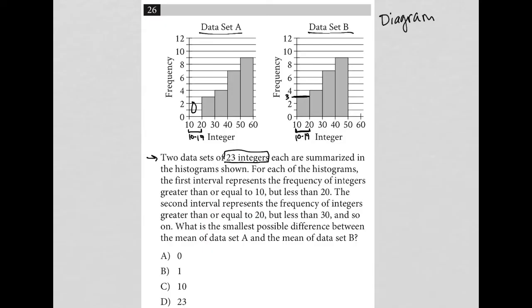Then it goes on to say the second interval represents the frequency of integers greater than or equal to 20, but less than 30, right? So we just continue on. So that'd be 20 to 29. Here would be 30 to 39, 40 to 49, 50 to 59. And that would, of course, be applicable for both of our histograms.